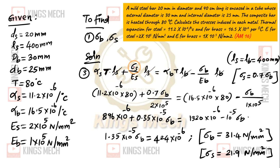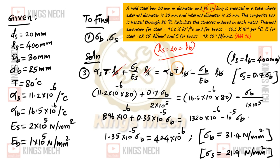Alpha T L plus sigma by E into L. Brass length and steel length — you take both as the same. LS and LB cancel. Alpha into T value, sigma into E value. Already we know that sigma S is equal to 0.7 sigma B.